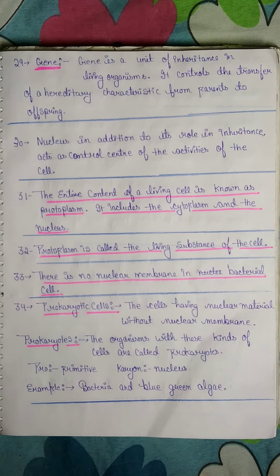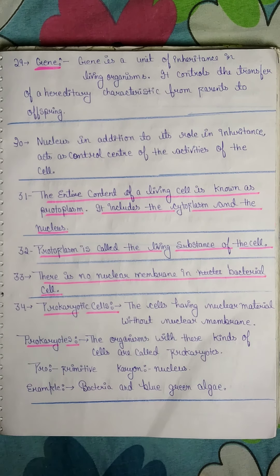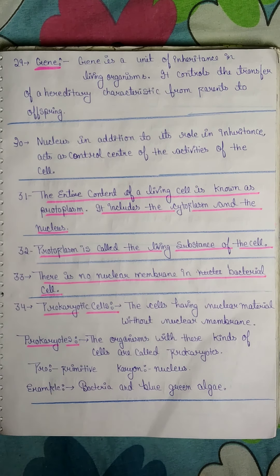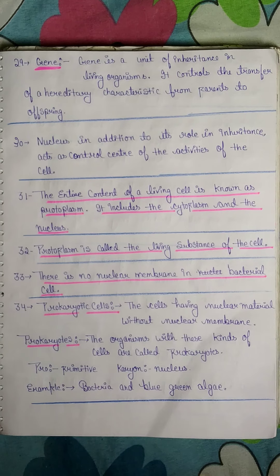Point 33: There is no nuclear membrane in a bacterial cell. Point 34: Prokaryotic cells — cells having nuclear material without a nuclear membrane. Prokaryotes are organisms with these kinds of cells. The prefix 'pro' means primitive. Examples are bacteria and blue-green algae.